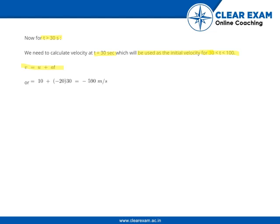That is, v = u + at. Putting the values, we get v = -590 m/s.